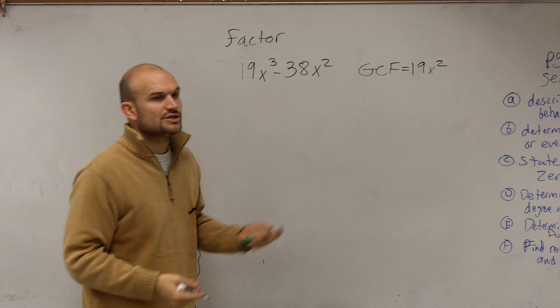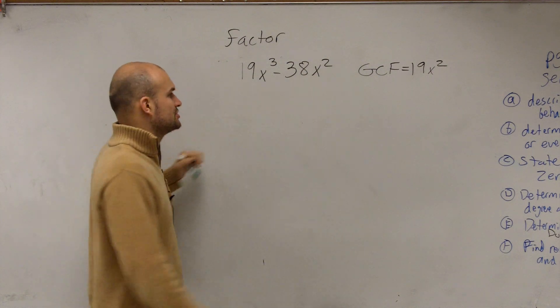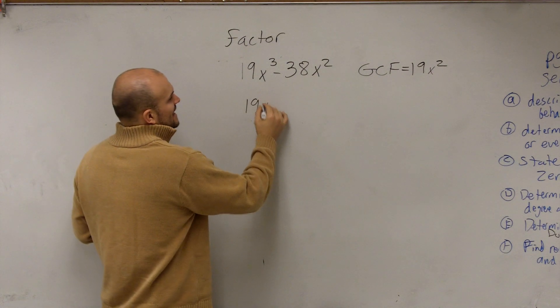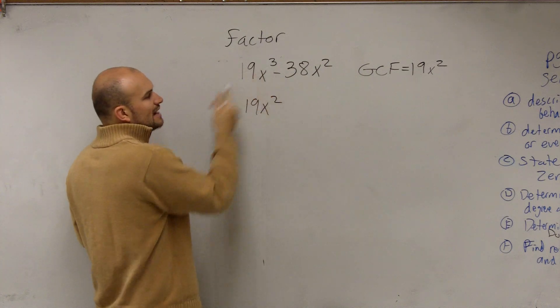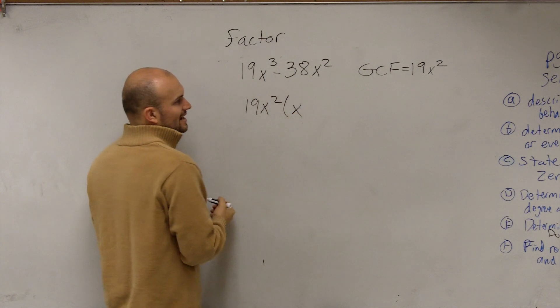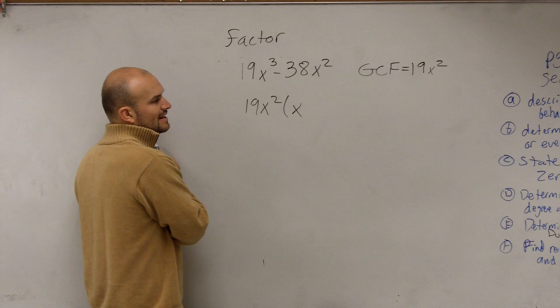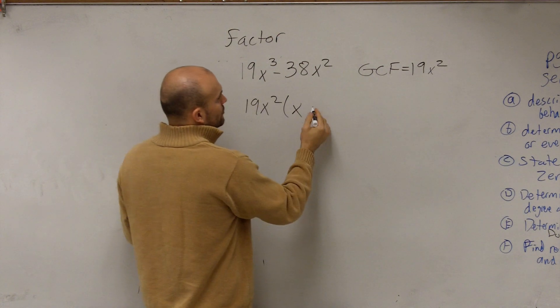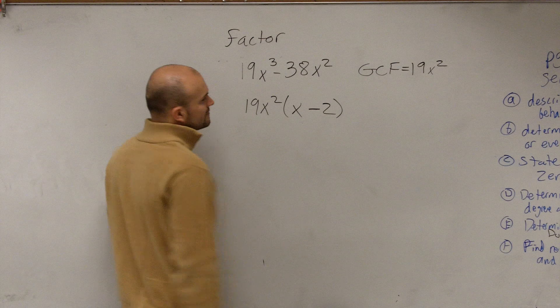So now what you can do is you can divide both terms by your GCF, and you're left with 19x squared. So if you do 19x cubed divided by 19x squared, you're just going to be left with x. And then negative 38x squared divided by 19x squared is going to leave you with a negative 2.